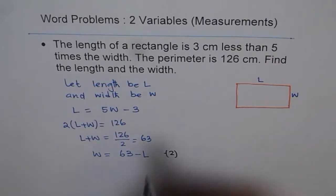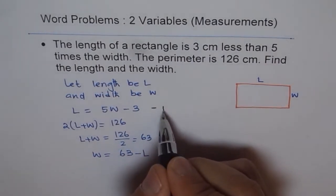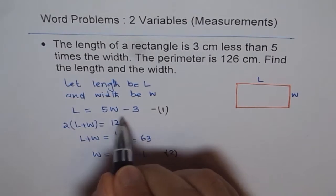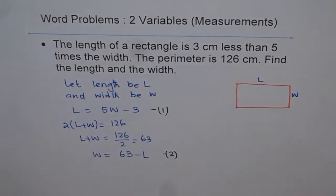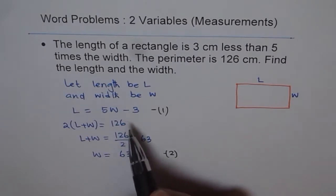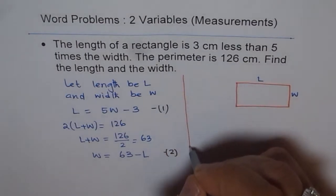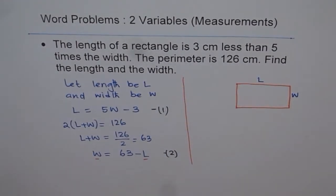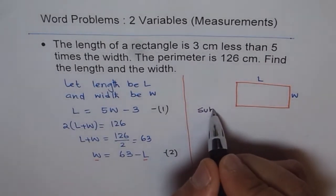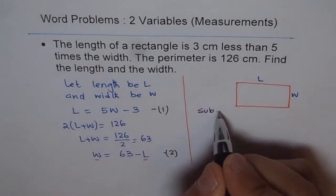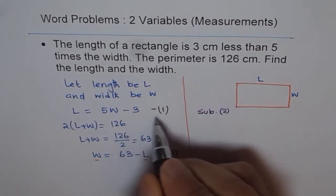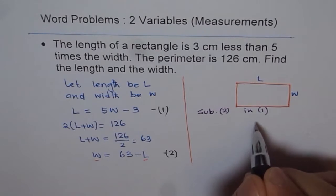So equation number 1 was that length is 3 less than 5 times the width. Now we have two equations, and from these two equations we can find value of L and W, both the variables. So we can use the method of substitution since we have already isolated W in terms of length. So what we will do is we'll substitute W from 2 in 1.